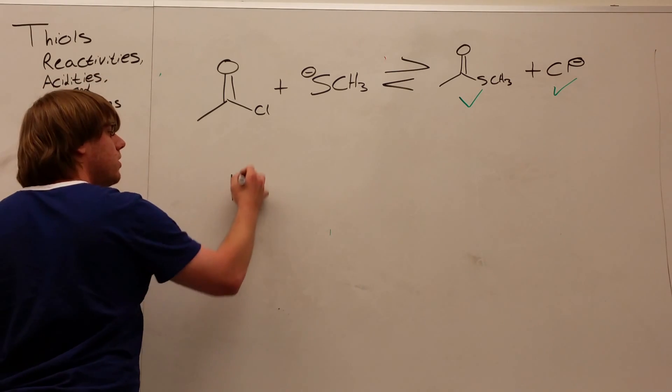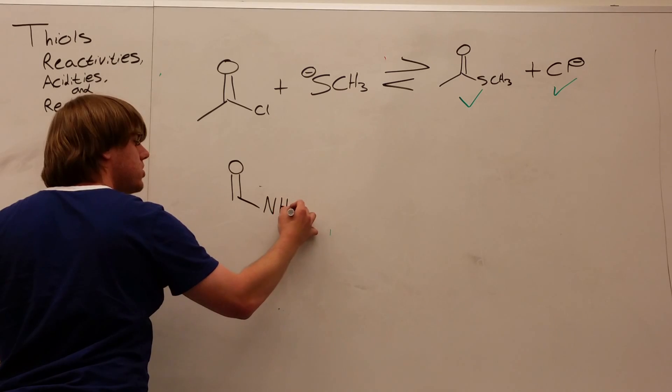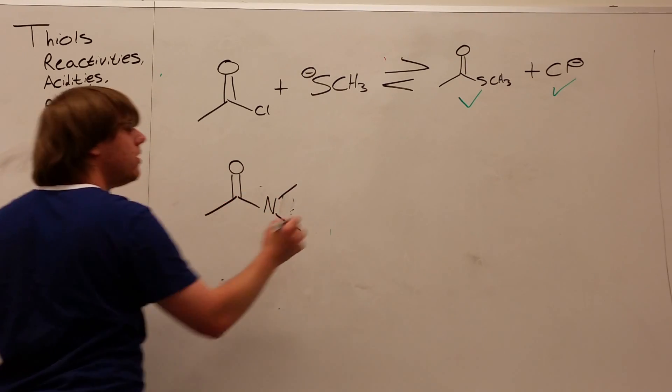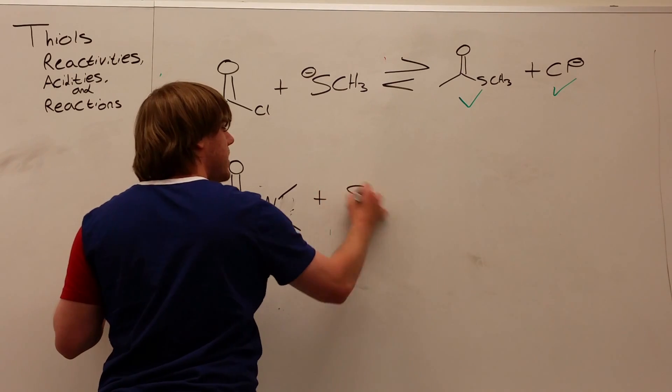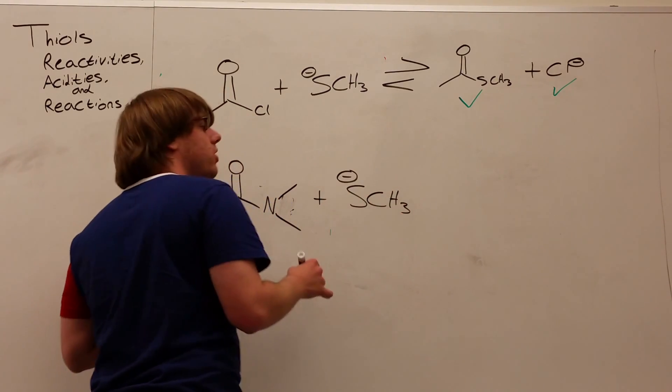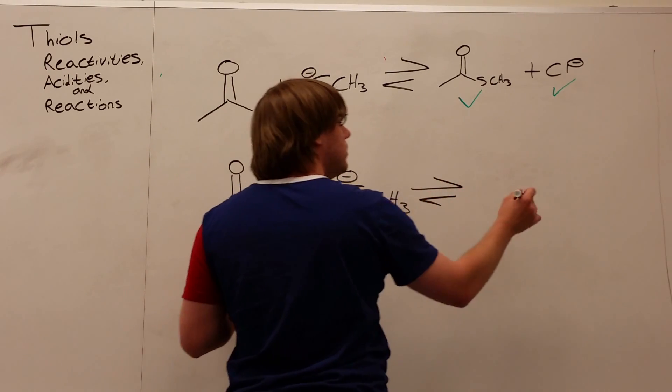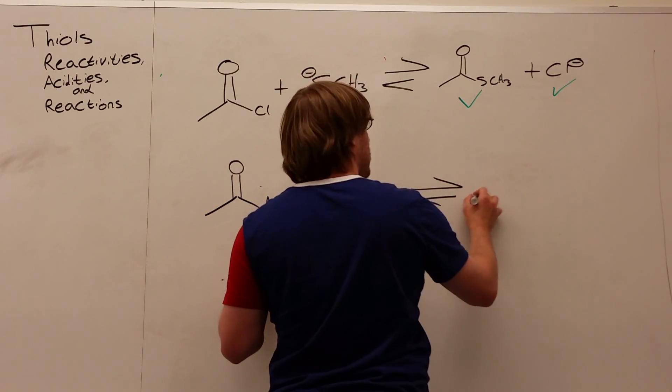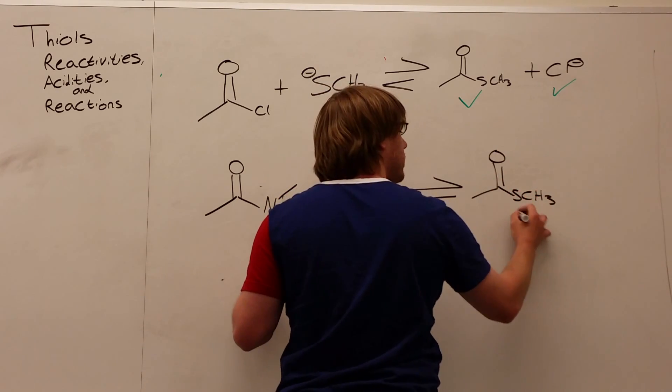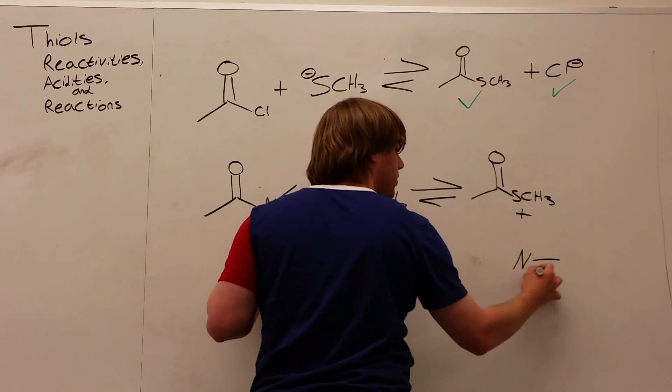Let's give you an amide now, NCH3, NCH3, and again we're going to react that with SCH3 minus. And we're going to compare that to the thioester, plus N-methyl minus.